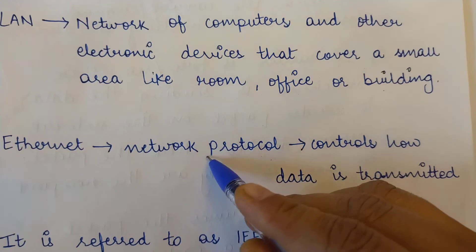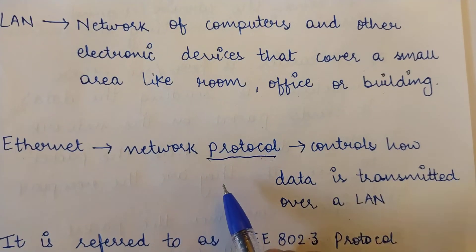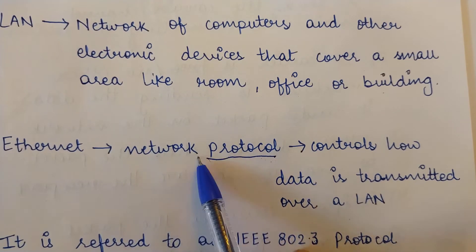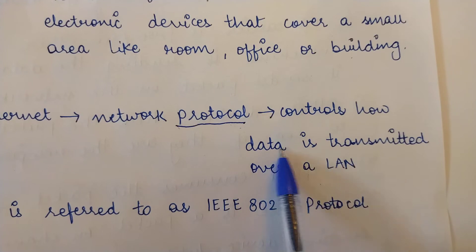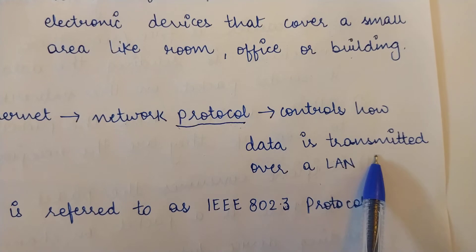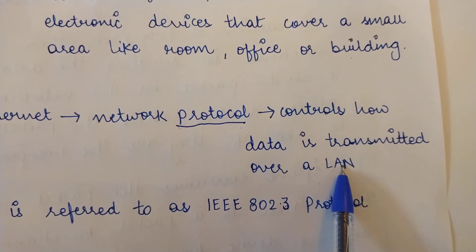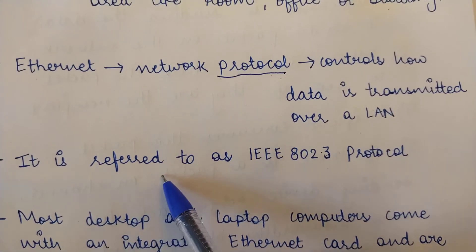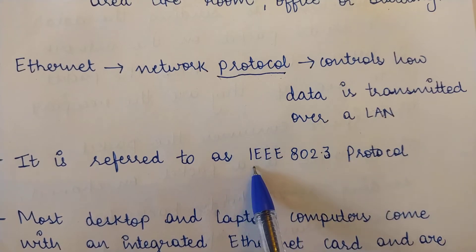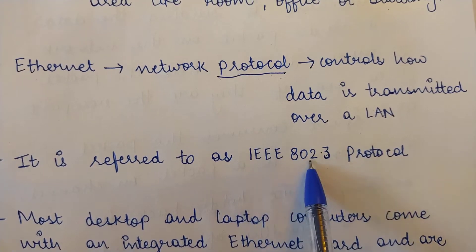Ethernet is a network protocol. A protocol is a set of rules for communication among devices in a network. All devices in a network that want to communicate must follow the same protocols. Ethernet is the network protocol that controls how data is transmitted over a LAN. It is also referred to as IEEE 802.3 protocol — Ethernet and IEEE 802.3 refer to the same thing.